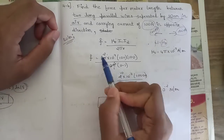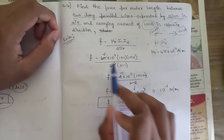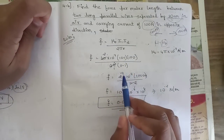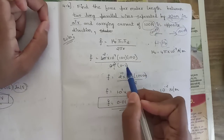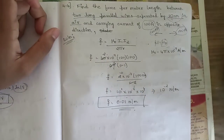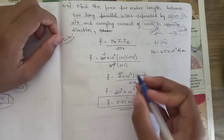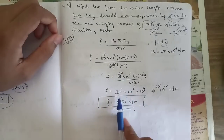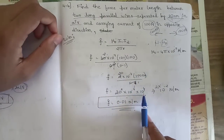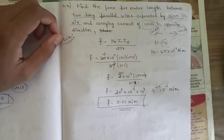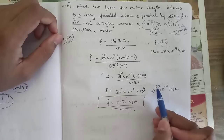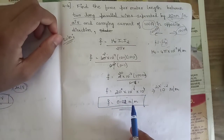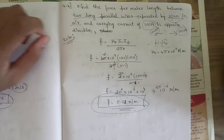Simplifying: cancel 2π from numerator and denominator, giving 2 × 100 × 100 = 20,000. With 0.1 in the denominator: 20 × 10⁻⁷ × 10⁴ = 20 × 10⁻³ = 0.02. Therefore F = 0.02 N/m.